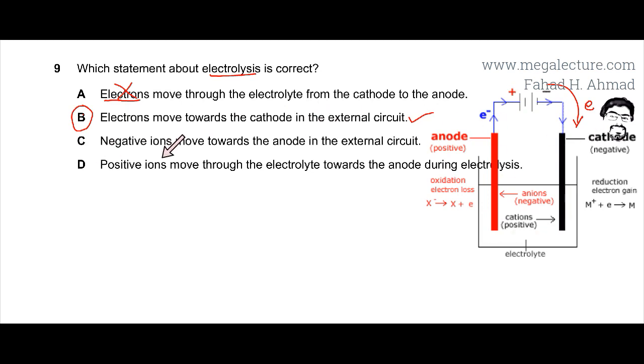Option D states that positive ions move through the electrolyte towards the anode. That is also incorrect because positive ions travel towards the cathode — the cathode is negative and they are attracted to it. So this statement is also incorrect.